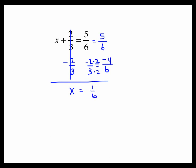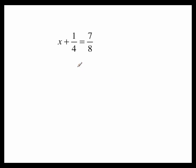Let's do another. X plus 1 fourth equals 7 eighths. To undo that adding of 1 fourth, we're going to do the opposite, which is subtract 1 fourth. The 1 fourth and the negative 1 fourths are opposites. They cancel out. We just get X.